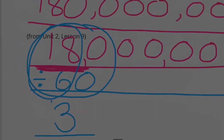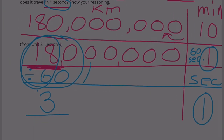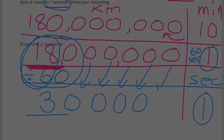I know 18 divided by six is three, so 180 divided by 60 would also be three. 180 divided by 60 is three — then bring down the remaining zeros. So light travels about 300,000 kilometers in one second.